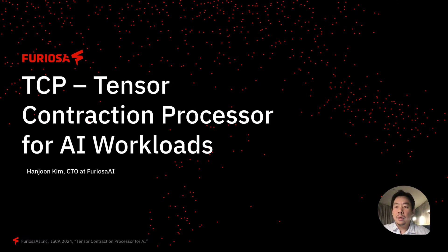Hi, I'm Hanjun from Furiosa AI. We develop high-performance commercial AI chips and full software stack used for inference in data centers. Today, I'd like to introduce a core idea of our architecture, the Tensor Contraction Processor.